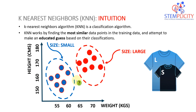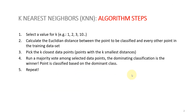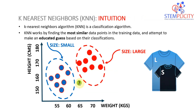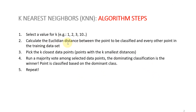Here are the algorithm steps for K-Nearest Neighbors. First, we select a value for K — an integer such as 1, 2, 3, up to 10. Second, we calculate the Euclidean distance between the point to be classified and the neighboring points. Depending on what K we selected — say K equals four — we select the four closest, four nearest points. We'll cover Euclidean distance in detail shortly.